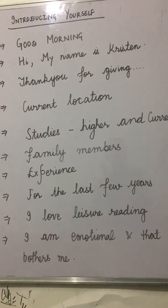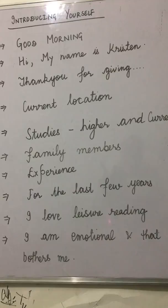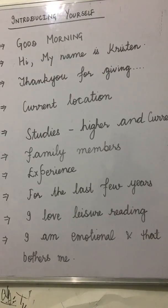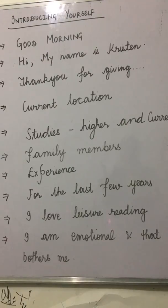Next, include your educational background. If you are at school or college level, simply state what you have completed — for example, 'I have done my Plus 2 and my secondary education from this school,' using the full school name. For higher studies, you might say 'I have done my post-graduation from Punjab University and am currently pursuing B.Ed from Punjabi University.'